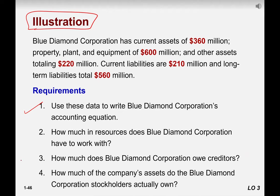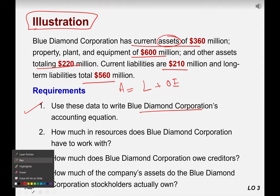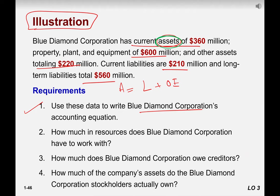Everybody read the illustration? Yes. Okay, let's do it together. Blue Diamond Corporation has current assets of 360 million, property, plant, and equipment of 600 million, and other assets totaling 220 million. Current liabilities are 210 million and long-term liabilities total 560 million, right? Use these data to write Blue Diamond Corporation's accounting equation. What is the accounting equation? Assets equals liabilities plus owner's equity. So what is the value of the assets we have? Let me change the color so that it will be easy for you guys here. We have assets 360 million, right? Do we have any other assets?